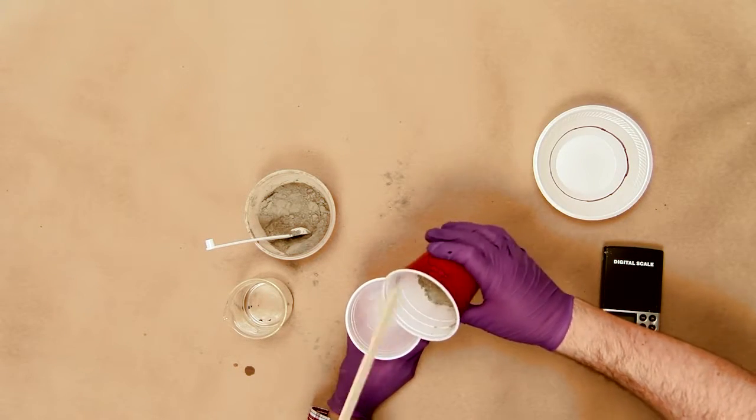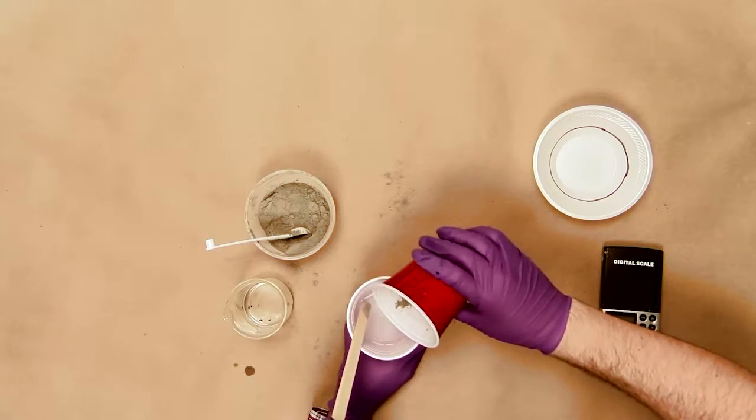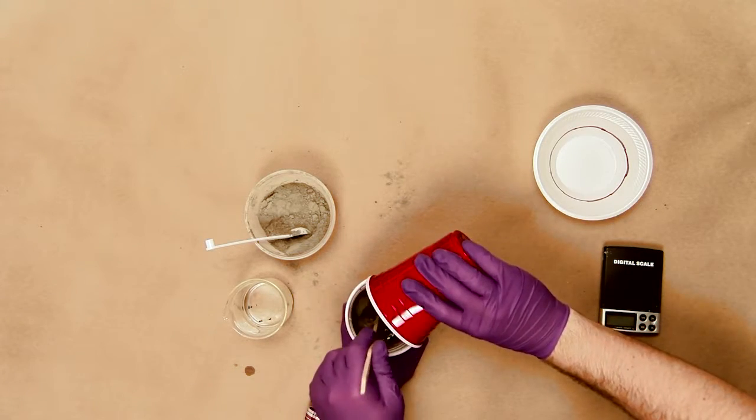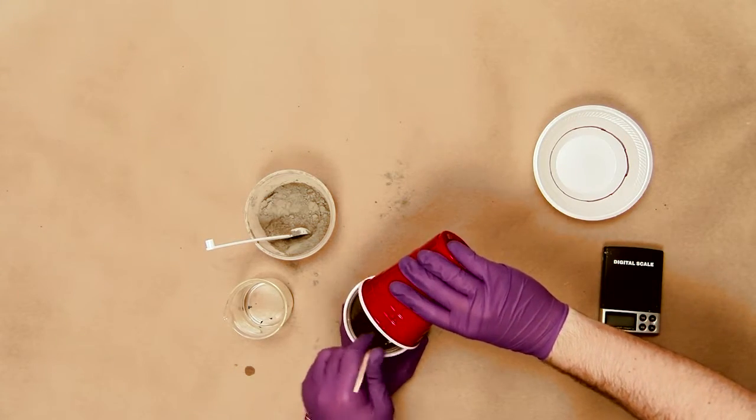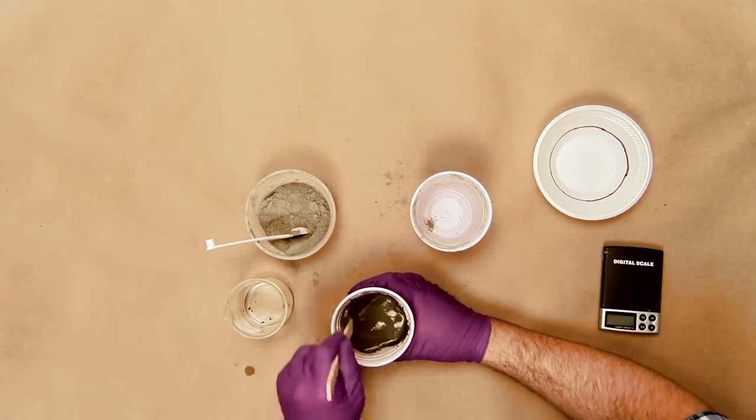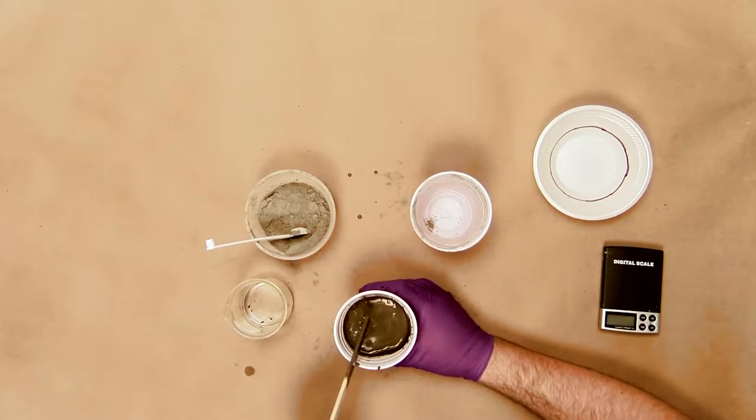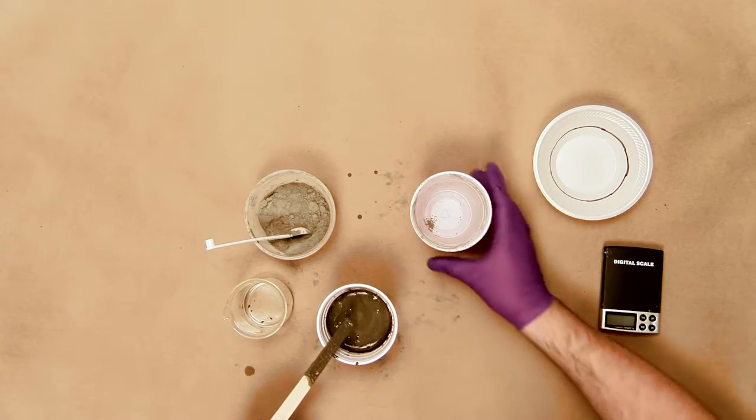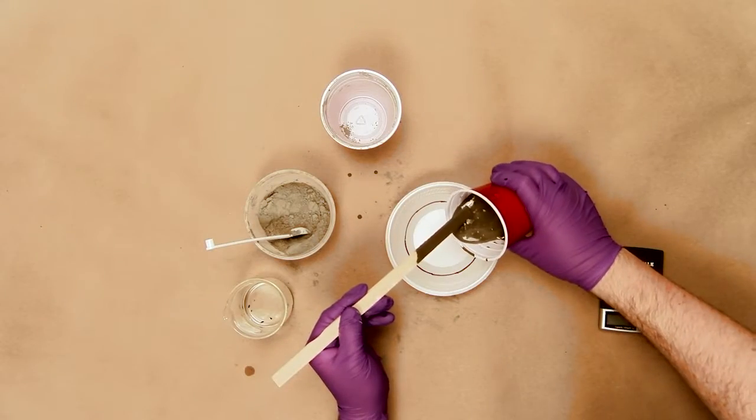Use the cup of pre-measured cement powder and slowly add some of the cement powder to the water. Stir the mixture with a popsicle stick or plastic spoon until well blended. Continue adding cement powder and stirring until all of the powder has been added and the mixture is well blended.